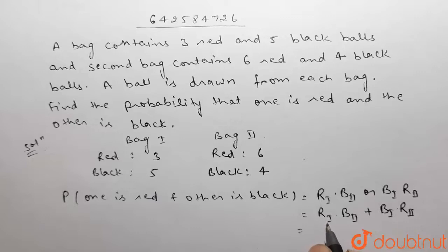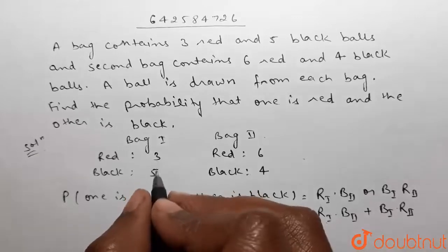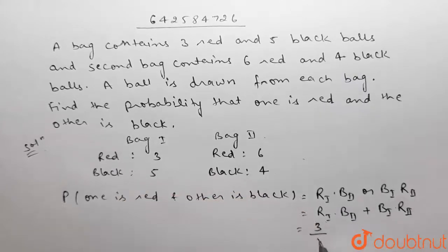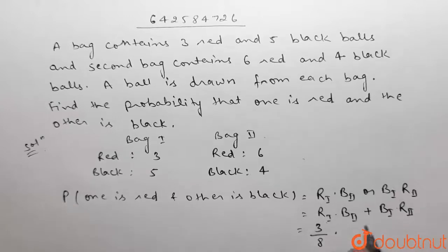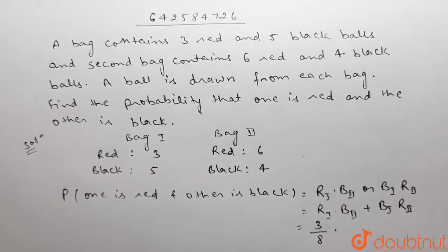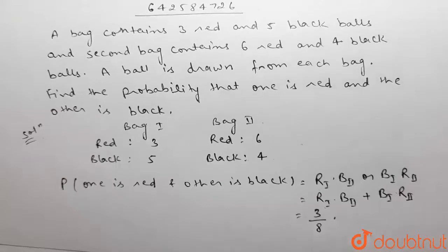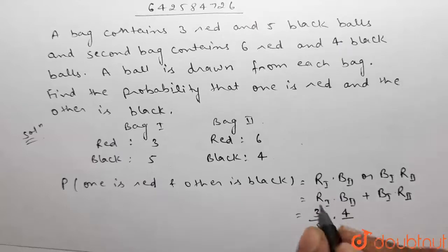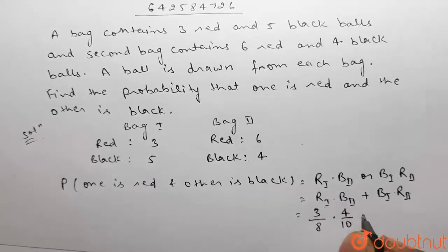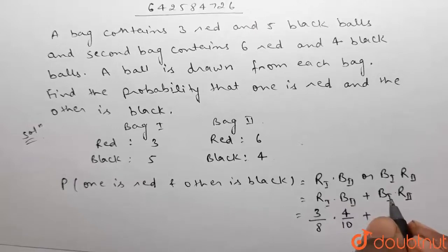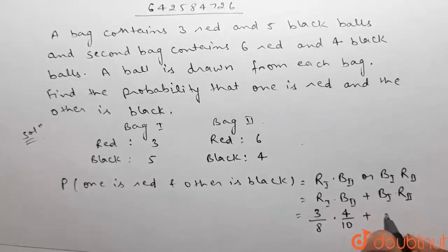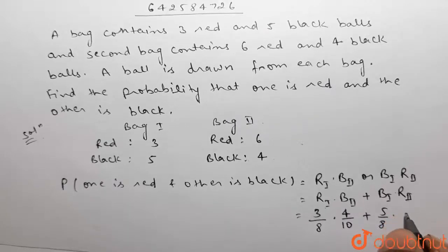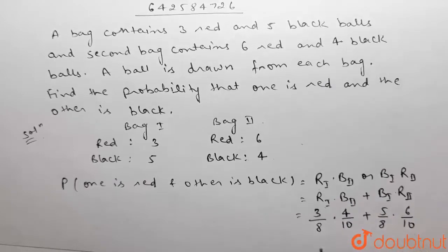The probability of getting a red ball from the first bag is 3 by 8, since there are three red balls out of eight total. The probability of getting a black ball from the second bag is 4 by 10. So we have 3/8 × 4/10, plus the probability of a black ball from the first bag, 5/8, multiplied by the probability of a red ball from the second bag, 6/10.